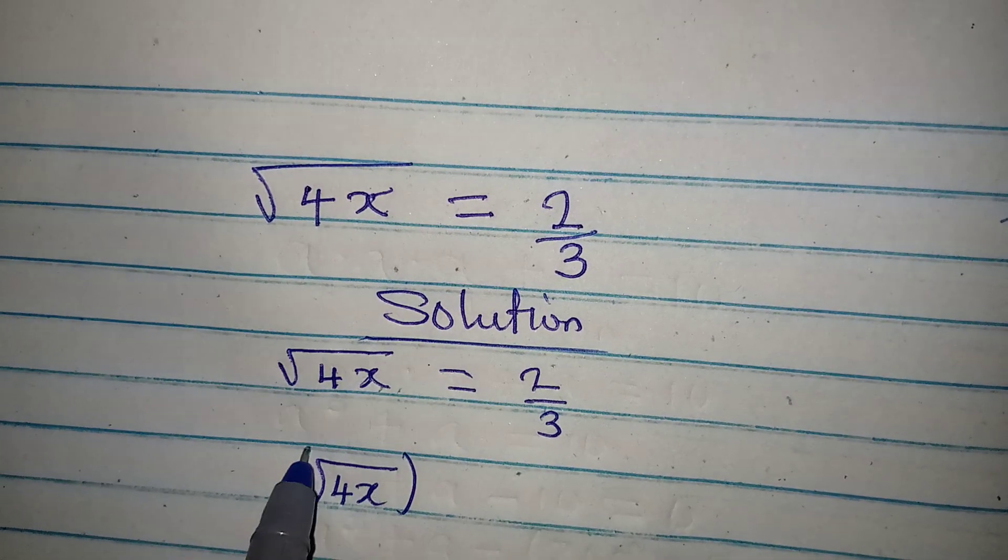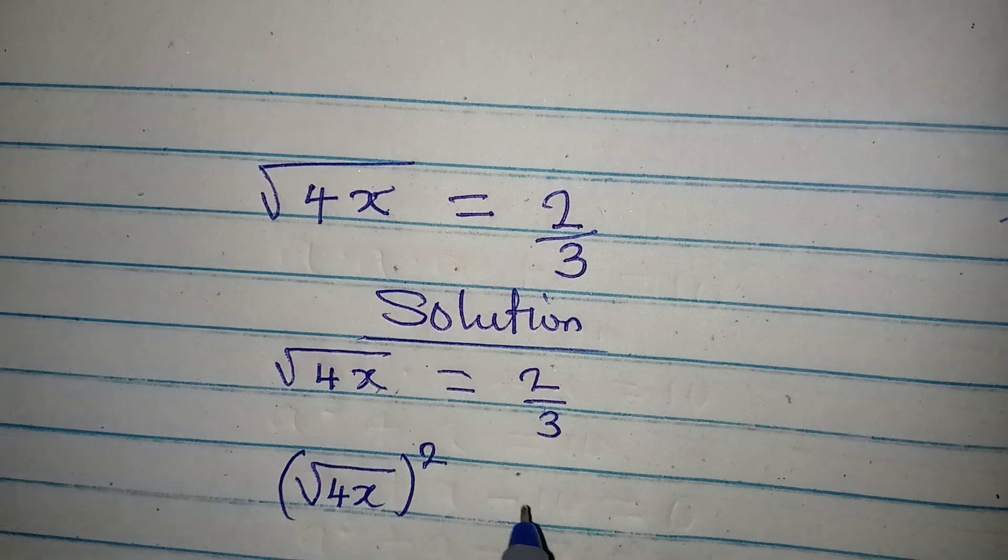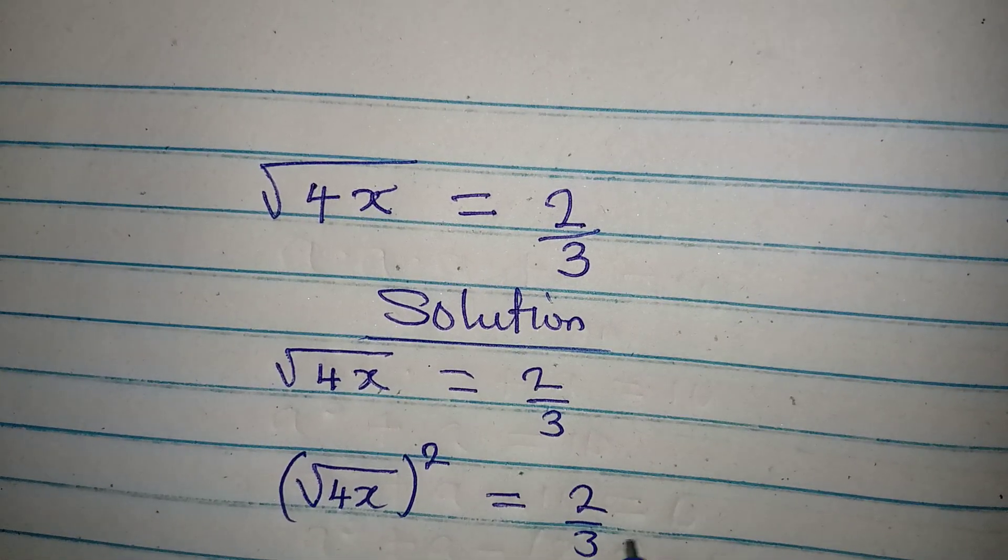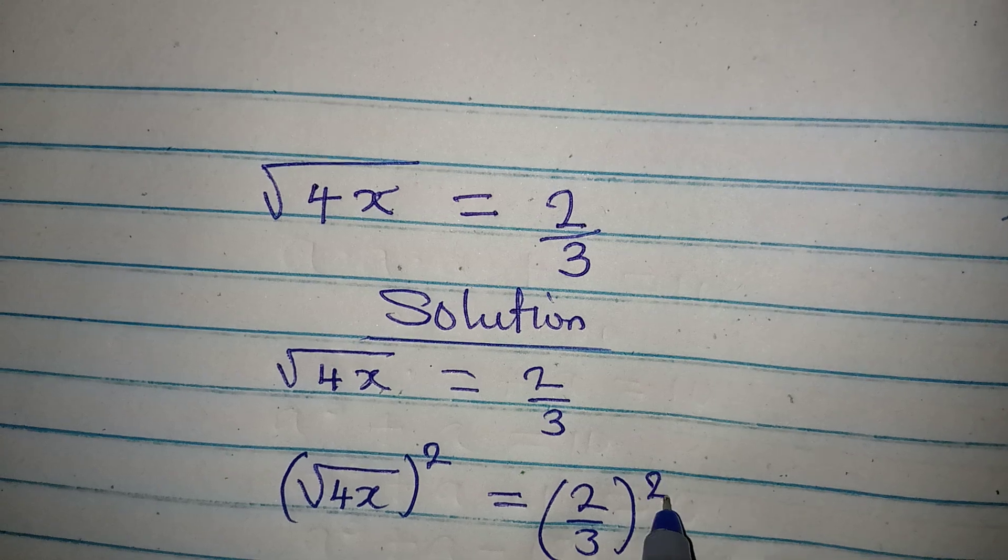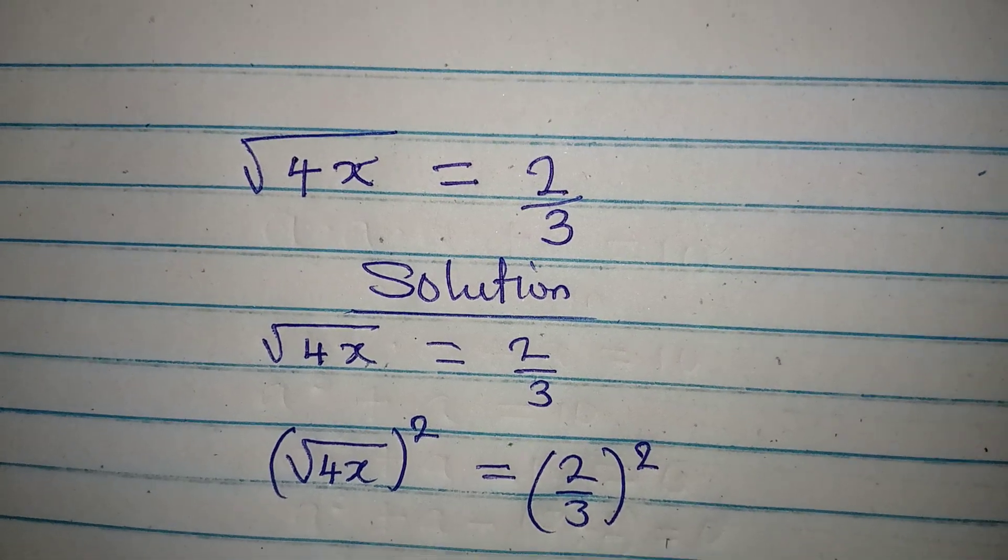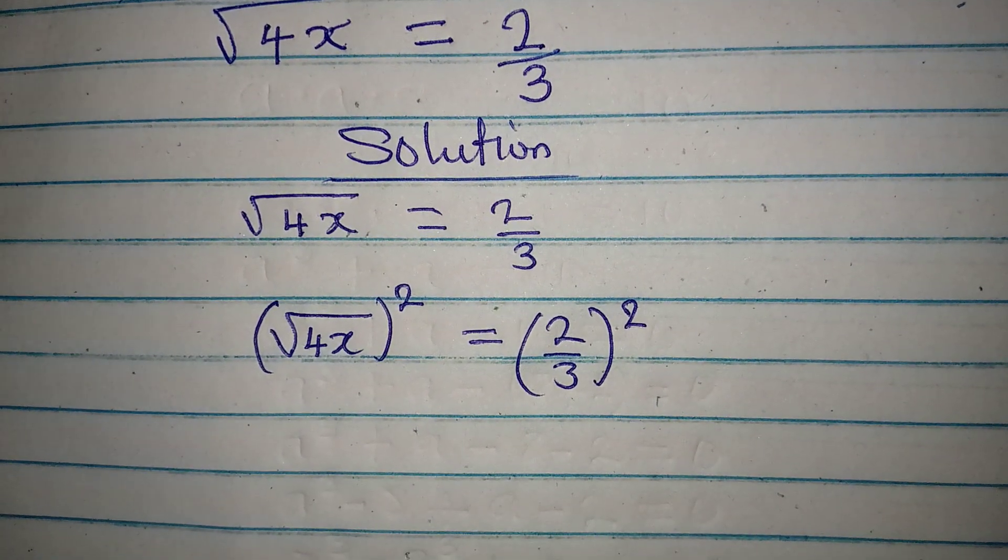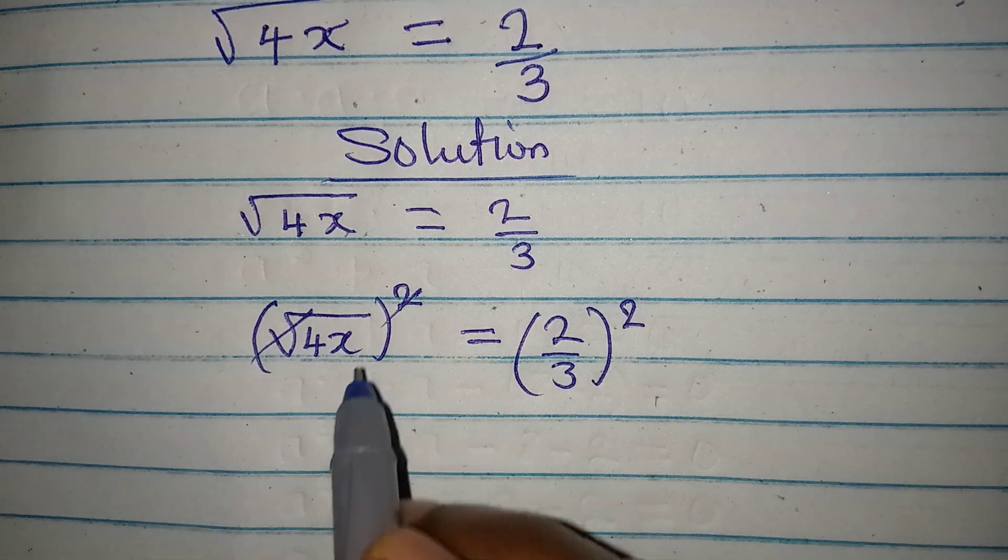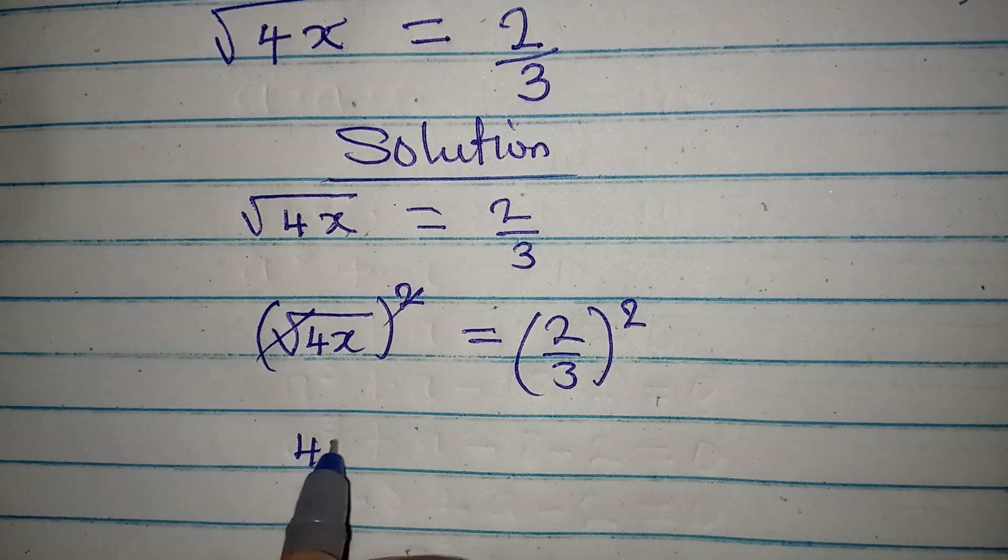And then we have 2 over 3 to the power of 2, because what you do on one side you do on the other. Now this can go with this so that 4x will simply be equal to 2 over 3 to the power of 2.